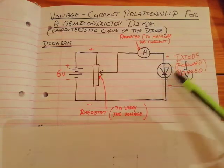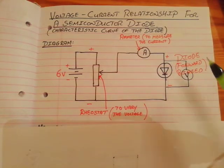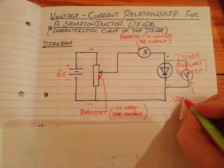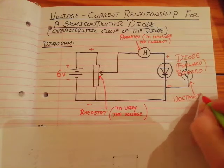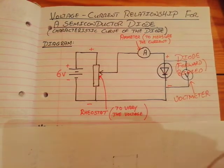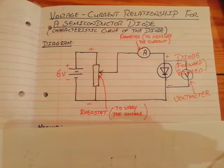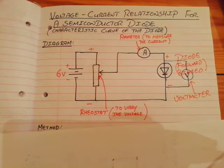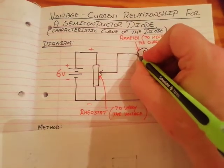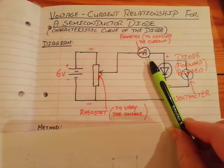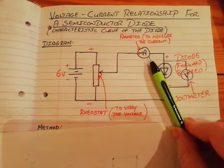The diode was forward biased. The voltmeter will measure the voltage and the ammeter will measure the current. Because the current going through a diode can be very, very small, we make one adjustment: we call it a milliammeter. A milliammeter is still a device that measures current, but it measures very, very small currents.